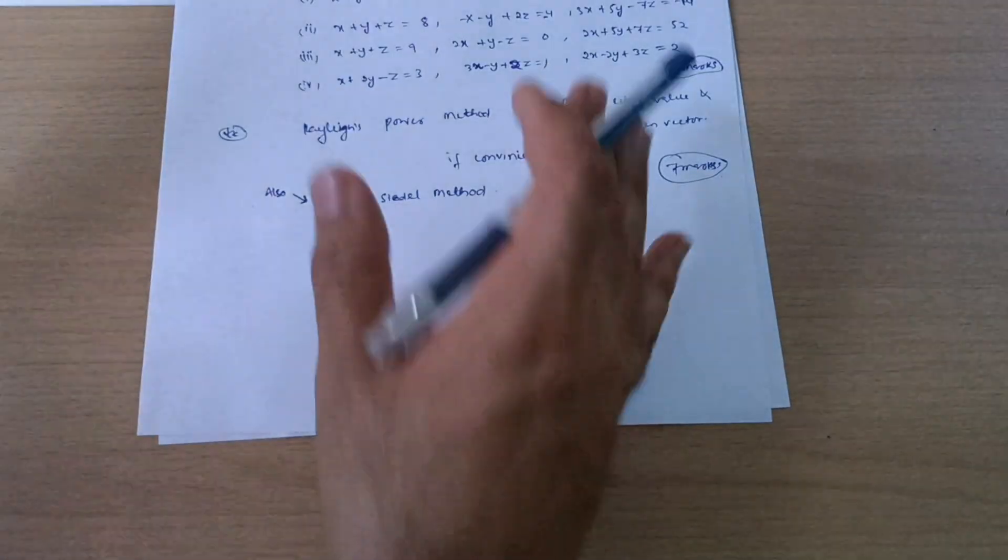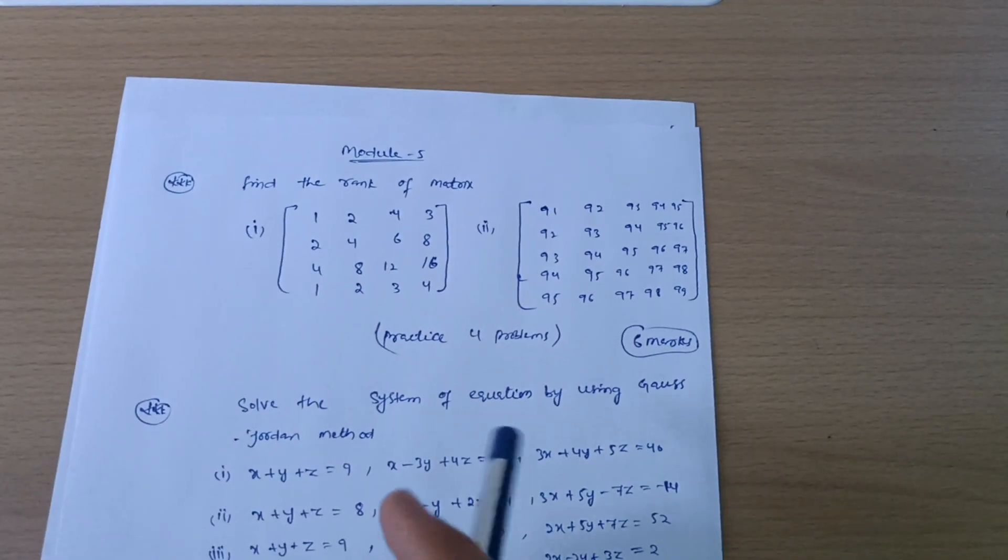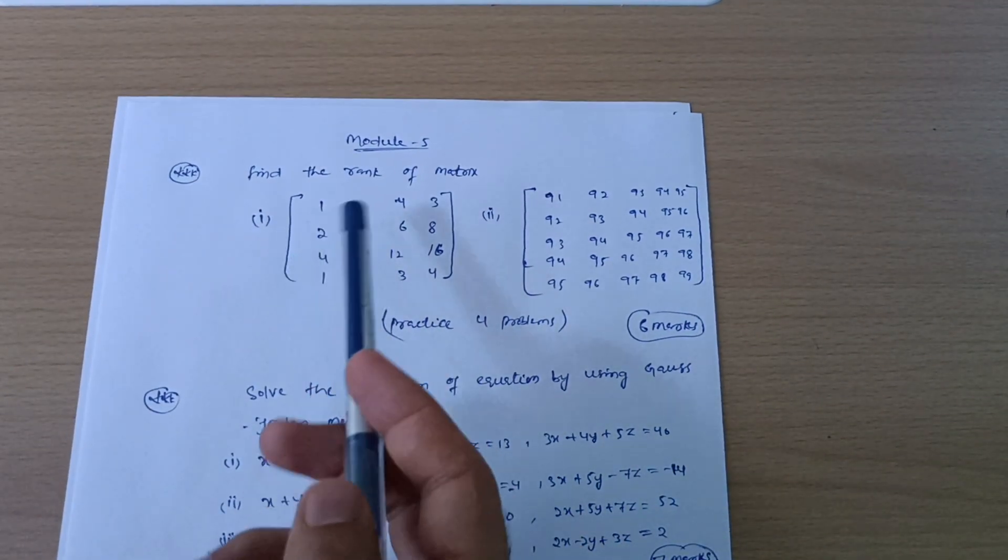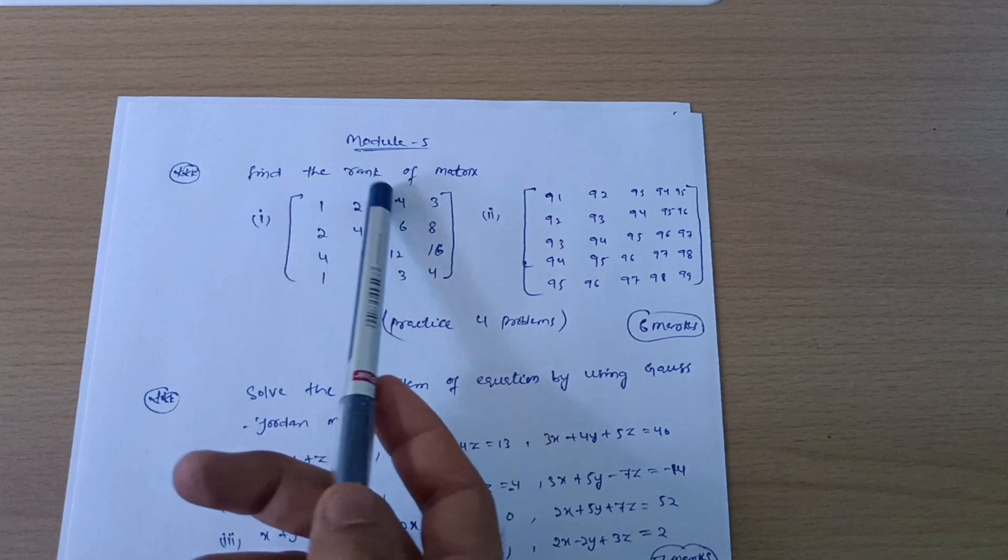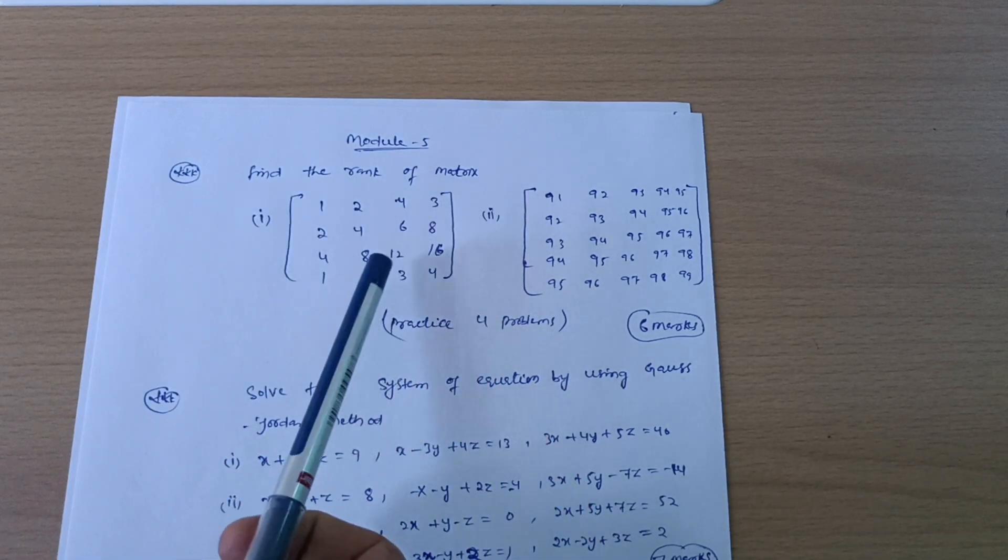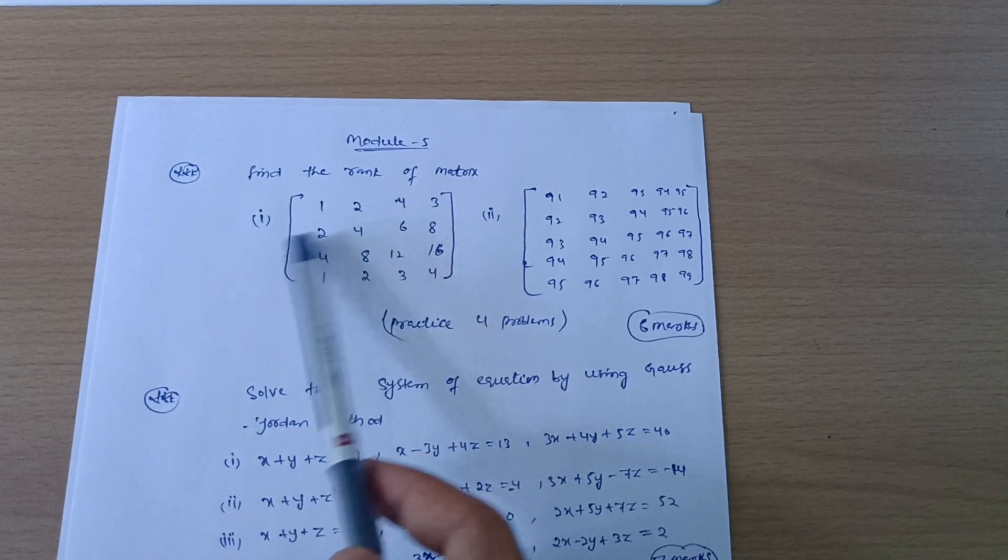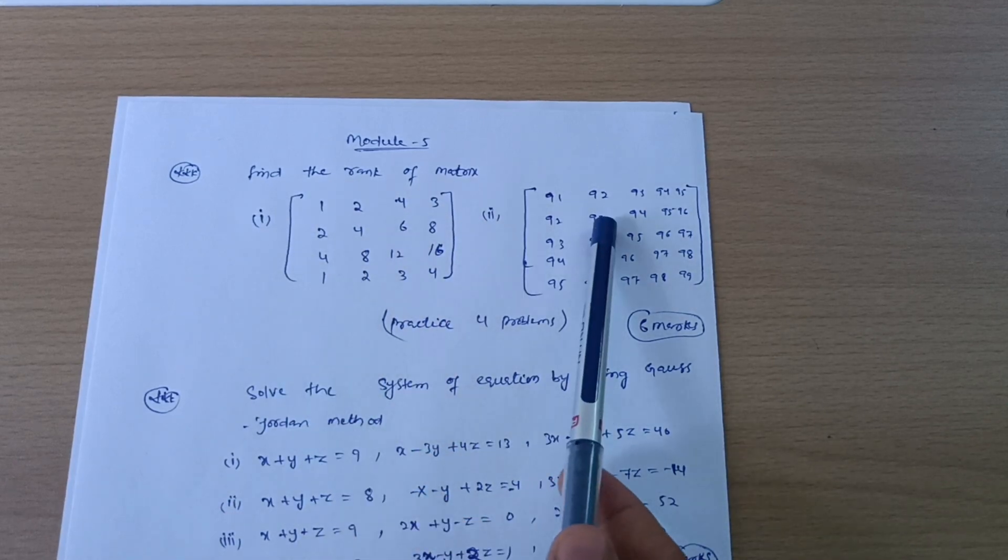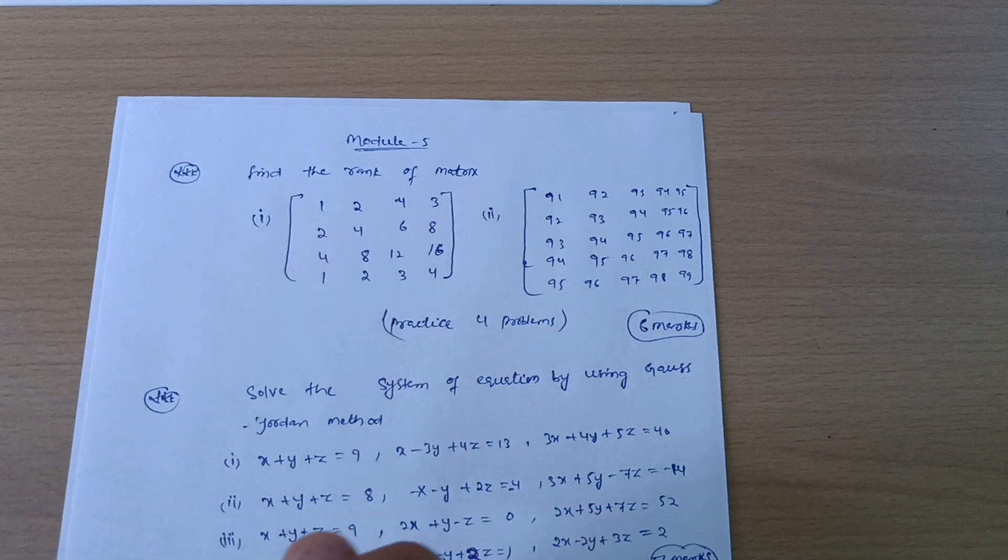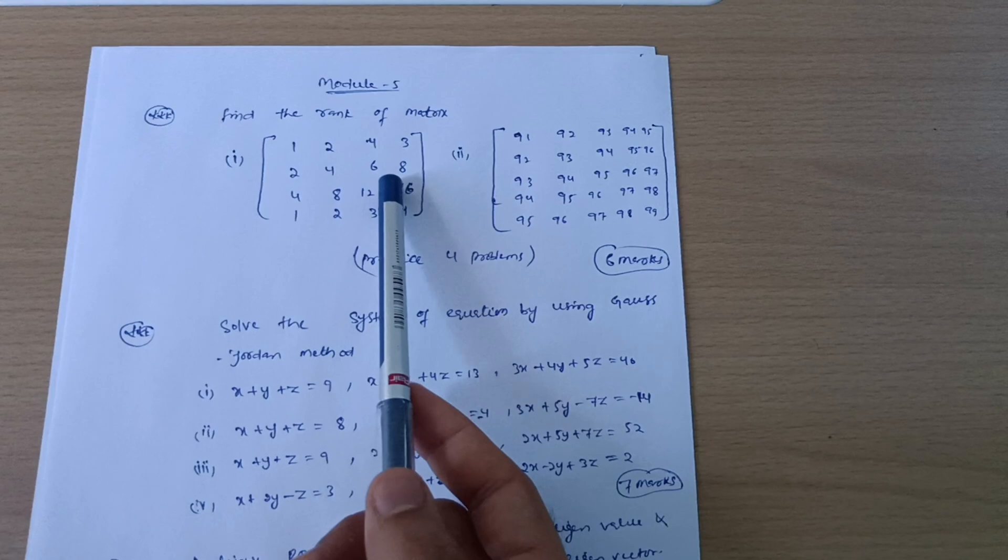Now we have last module which is the passing module and you should not leave any topic from this particular module. It is a simple module where you have to calculate the rank of the matrix. You should practice four to five problems on this concept. One is this I have taken, this question from the previous year question paper and also this for makeup paper from the previous year. So practice four to five problems on rank of matrix. Also videos will be available, I have uploaded already last time. It carries six marks.